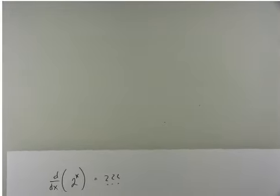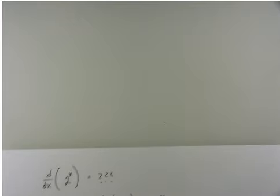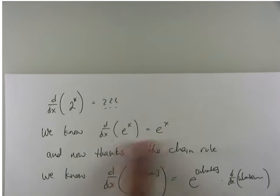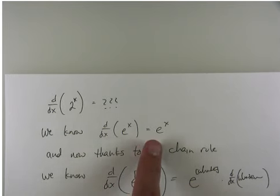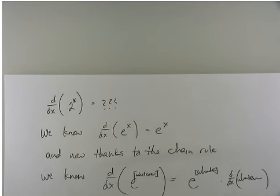We might be looking at the function 2 to the x. I don't know the derivative of that. I know e to the x — exponential functions with base e — I know how to handle those. But this is base something else, and right now I'm in the dark. I know that the derivative of 2 to the x is going to be 2 to the x times some number, but for 2 to the x, 3 to the x, 5 to the x, 100 to the x — I don't know about those.